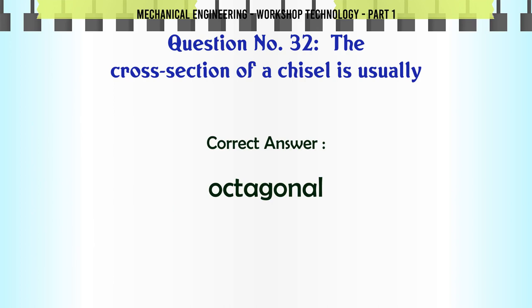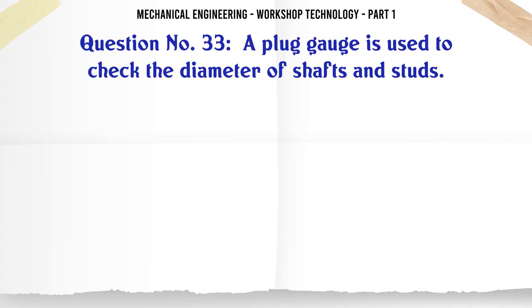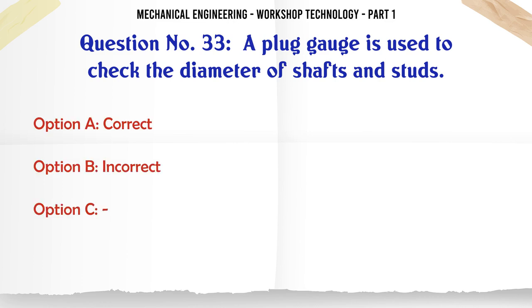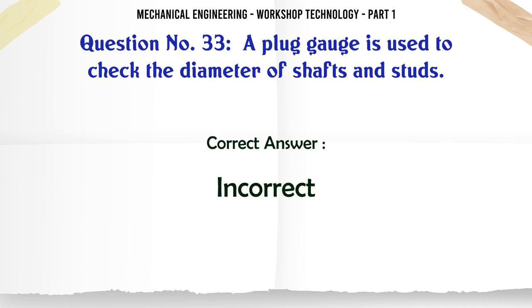A plug gauge is used to check the diameter of shafts and studs. A. Correct. B. Incorrect. The correct answer is: Incorrect.